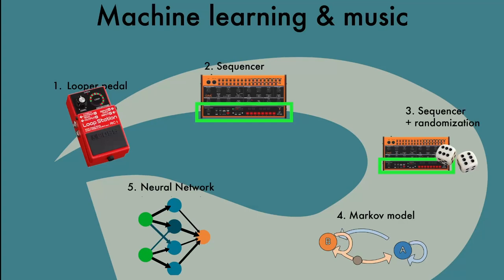First of all, we have our loop pedal, and then we have a sequencer, and then we have a third one, which is what I call a sequencer plus randomization. Then I'm going to talk about two machine learning models that are more what we understand as machine learning models, which is the Markov model, and then finally about what we call neural networks.